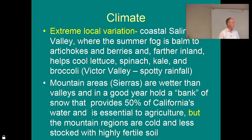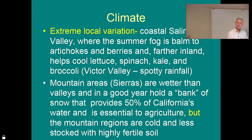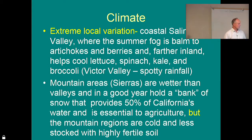Mountain areas like the Sierras are wetter than the valleys, and in a good year hold a bank of snow. This is our big story in California water: 50% of California's water supply is in that Sierra snowbank. It's held so that in springtime it starts melting, runs down, is picked up by all these dams, put into aqueducts, and then distributed all over the state for agriculture, the environment, and urban use. Up in the mountains themselves there's no arable land — it's too cold — but it stores the water so we can grow food down in the valleys.